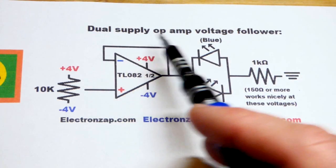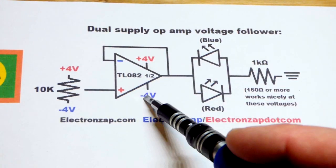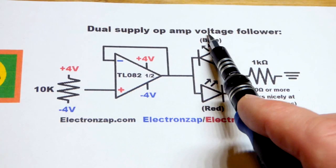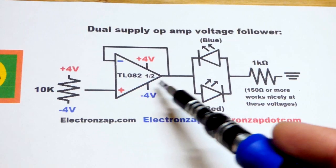So now in this video we're going to use a dual supply. You can see we got a positive voltage and a negative voltage in relationship to ground going to an op-amp as a voltage follower.